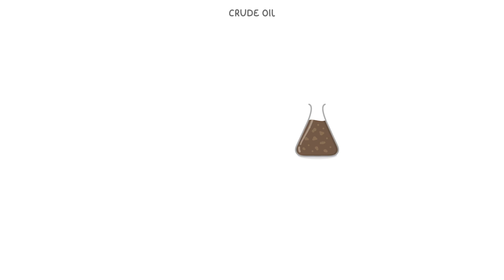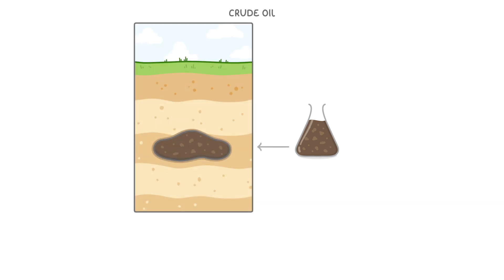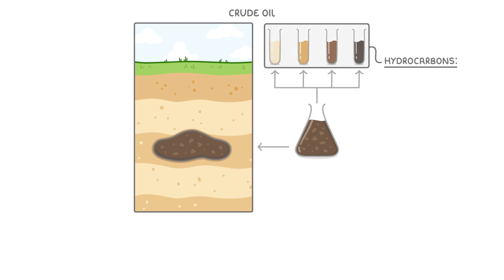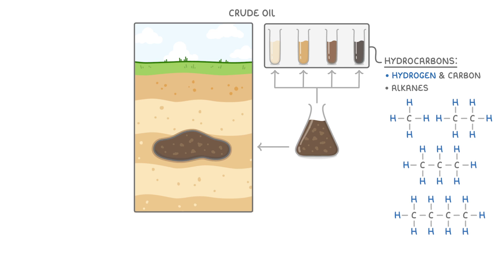Crude oil is a fossil fuel that we get from deep under the ground and is basically a mixture of lots of different compounds. Nearly all of these compounds, though, are hydrocarbons, which contain only hydrogen and carbon, and the most common type of hydrocarbons are alkanes, which we covered in the last couple of videos.